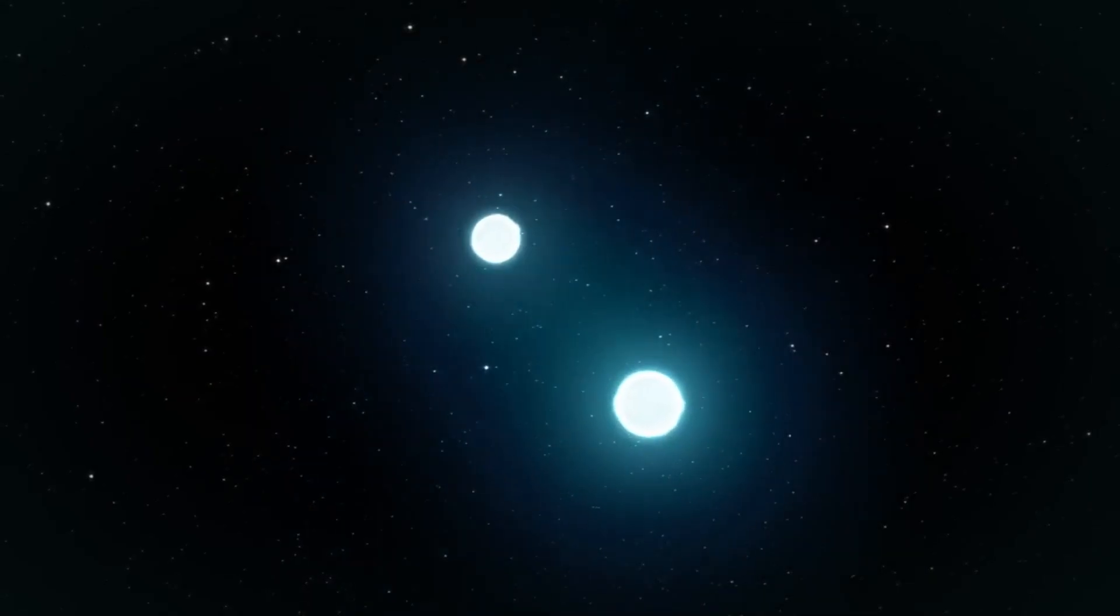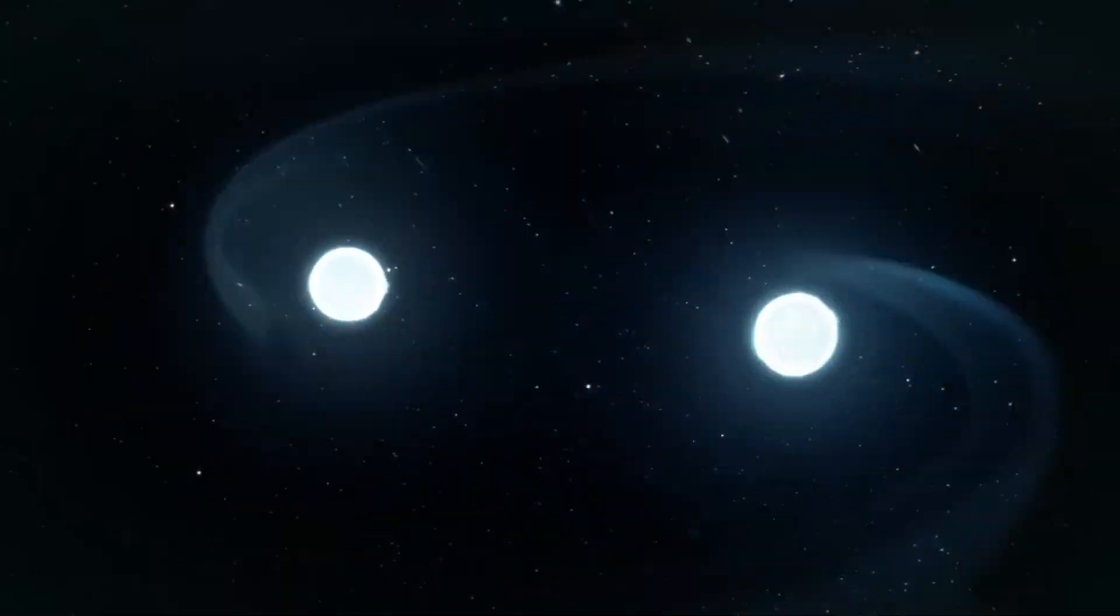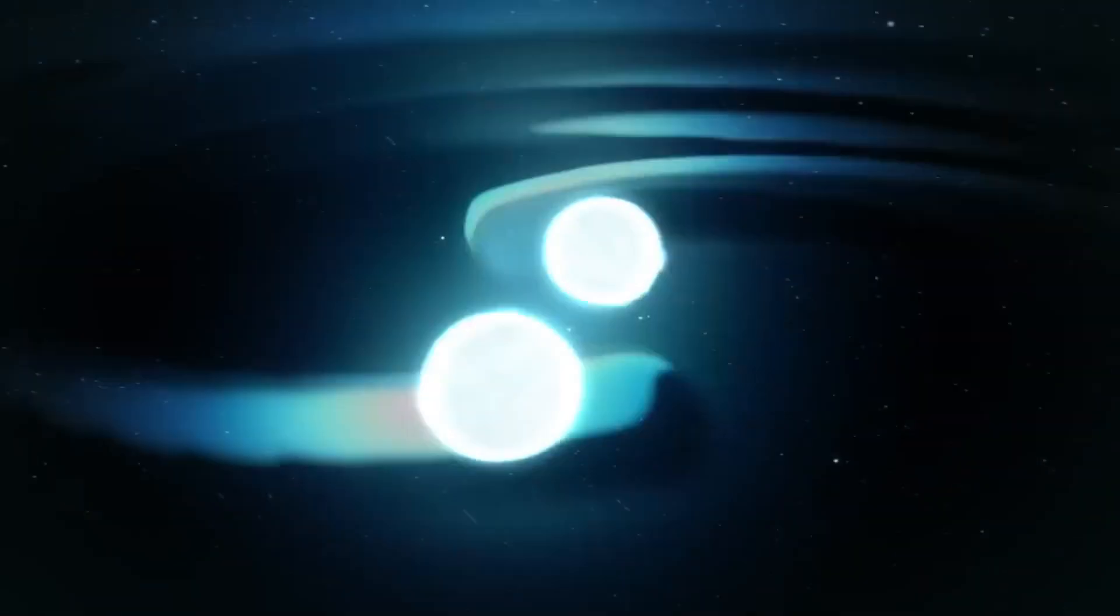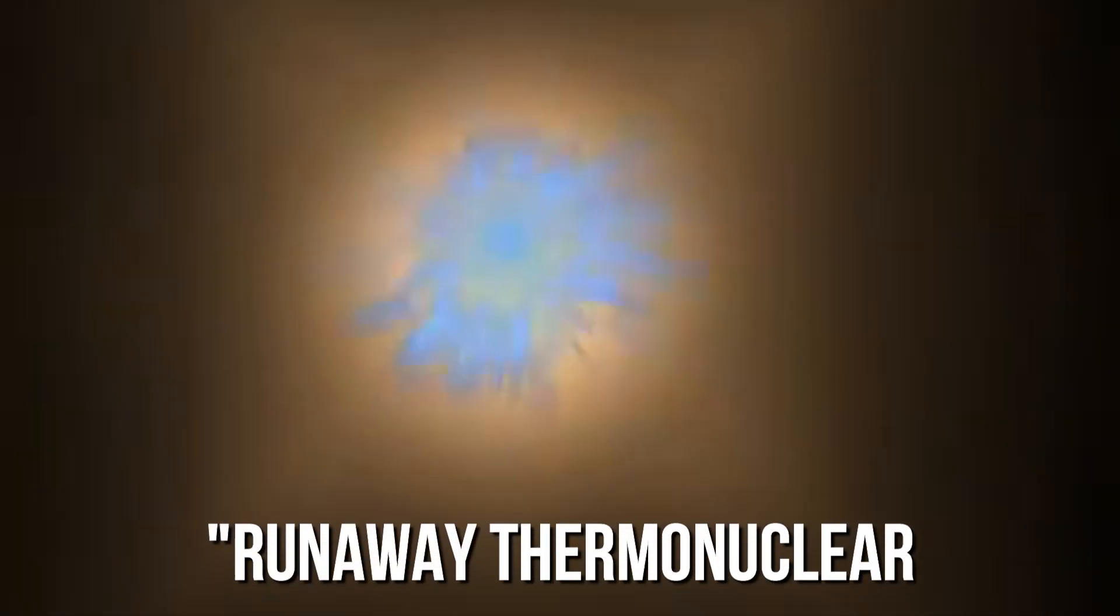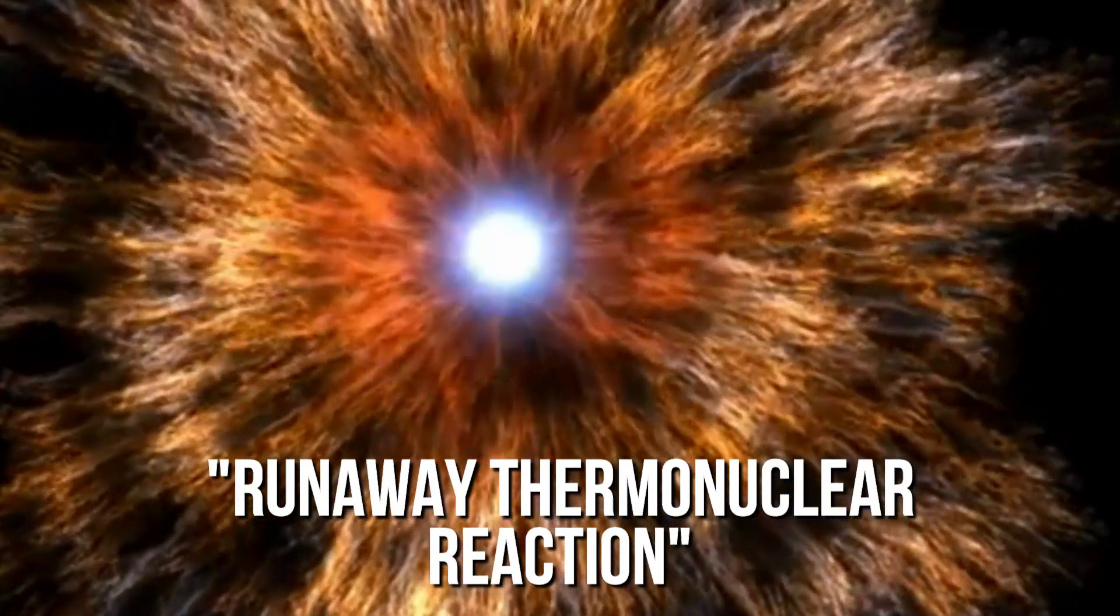The stars in the orbiting pair are close enough to each other that they interact violently. Over time, the red giant becomes increasingly unstable as it heats up, shedding its outer layers onto the white dwarf star. This transfer of matter causes the white dwarf's atmosphere to heat up gradually until it triggers a runaway thermonuclear reaction, leading to a nova outburst.